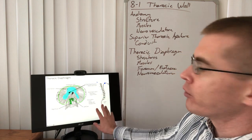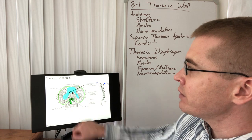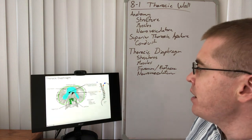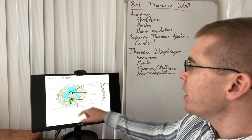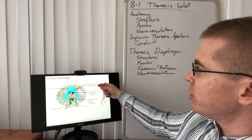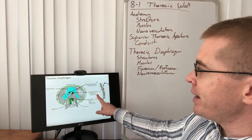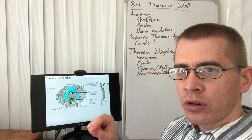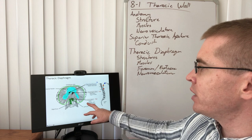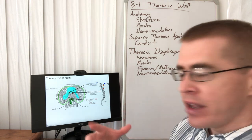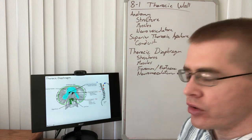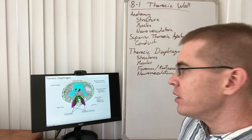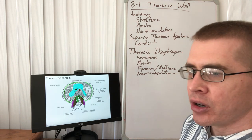Looking at the foramina and hiatuses of the diaphragm: the vena cava travels through at T8, the esophagus at about T10, and the aortic hiatus is in the posterior between the crura at about T12. At the esophageal hiatus, the vagus nerve travels with the esophagus to supply the abdominal GI tract. Behind the aorta is the azygous vein and the thoracic duct. The psoas major and quadratus lumborum are located on the posterior abdominal wall behind the thorax.